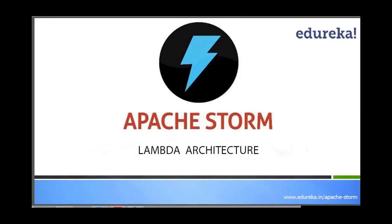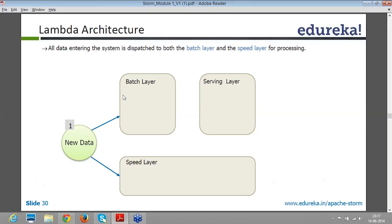So here is the Lambda architecture. Lambda architecture is basically a combination of both the speed layer and the batch layer. All the data entering into the system is dispatched to both the batch layer as well as the speed layer.